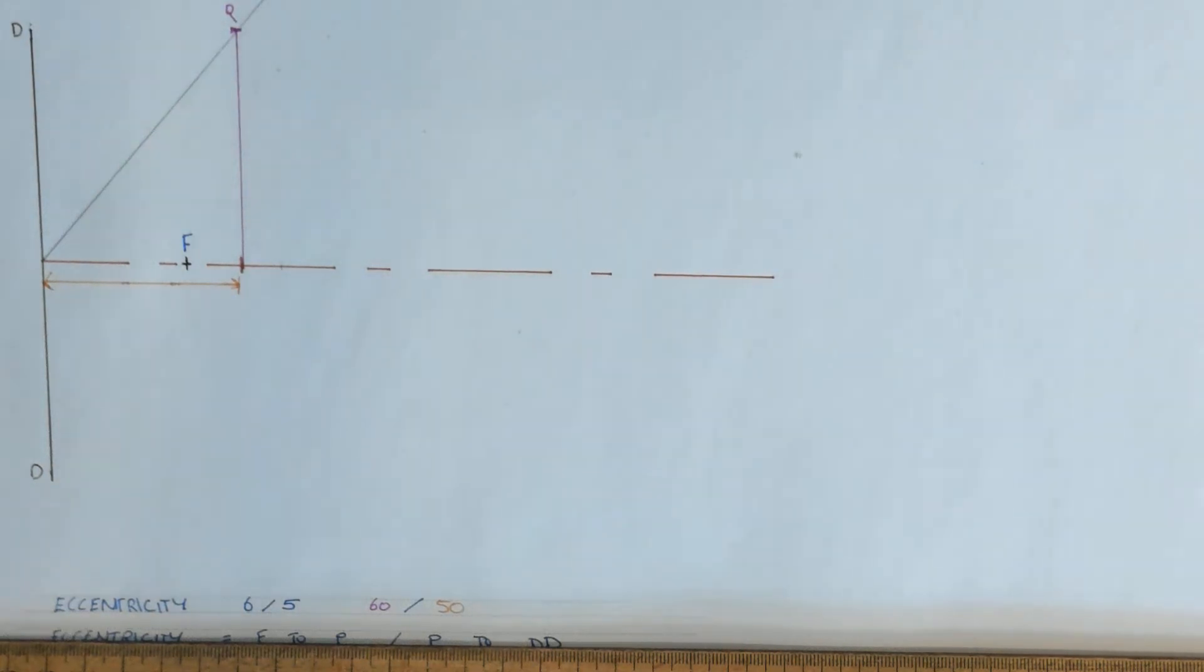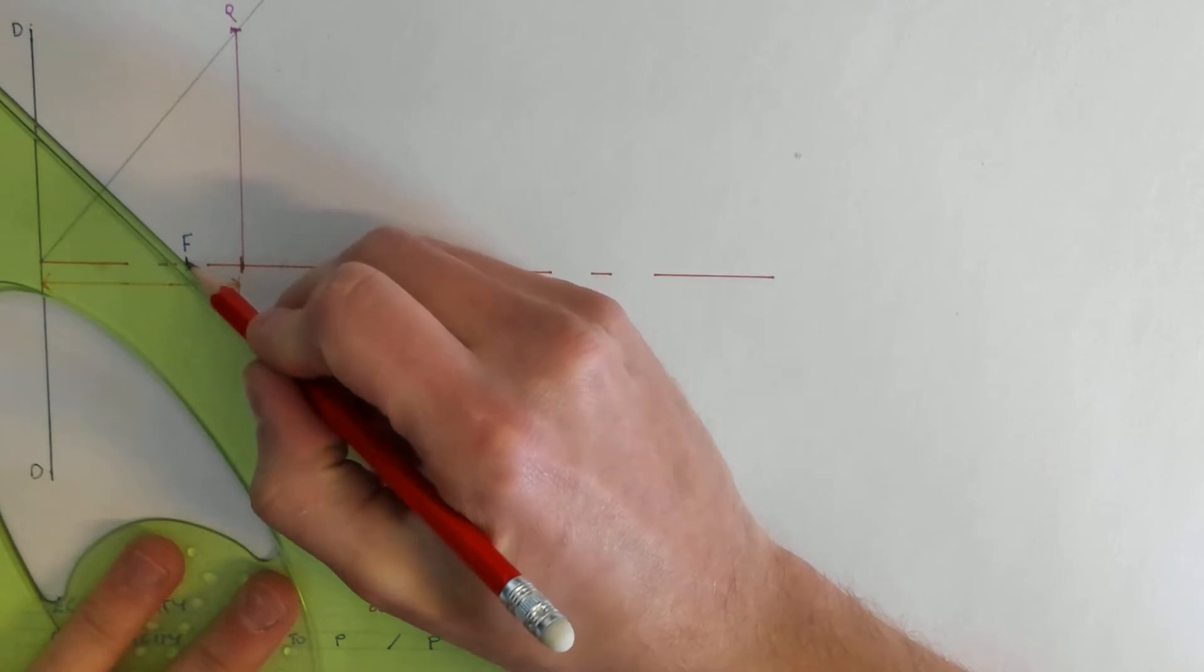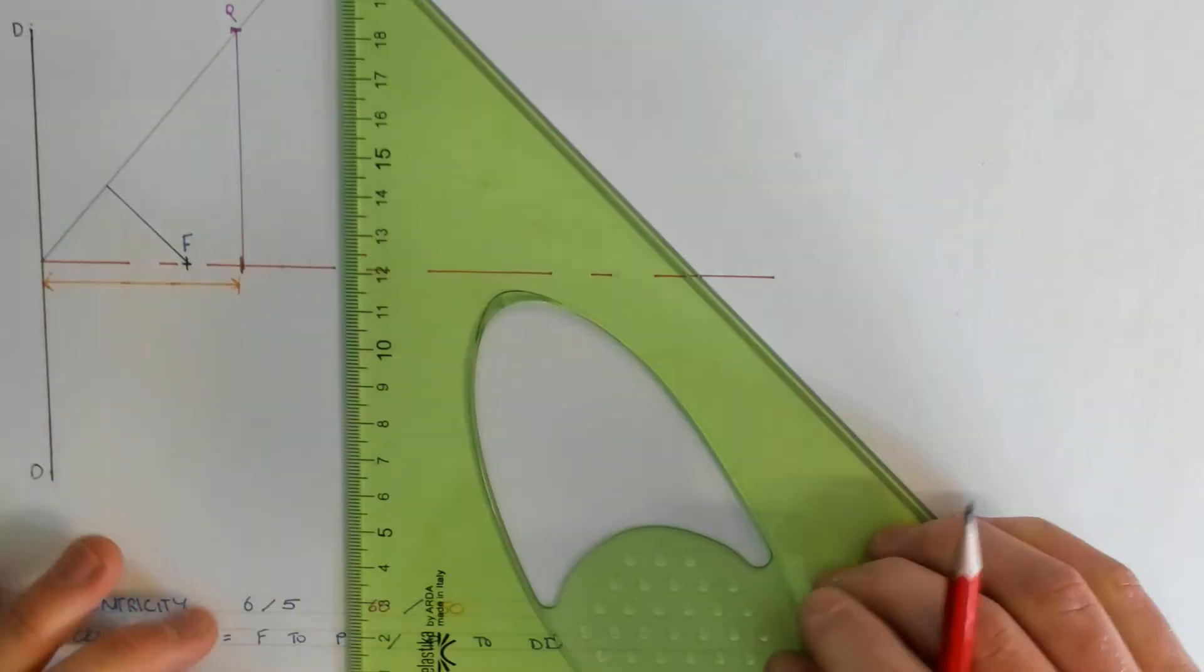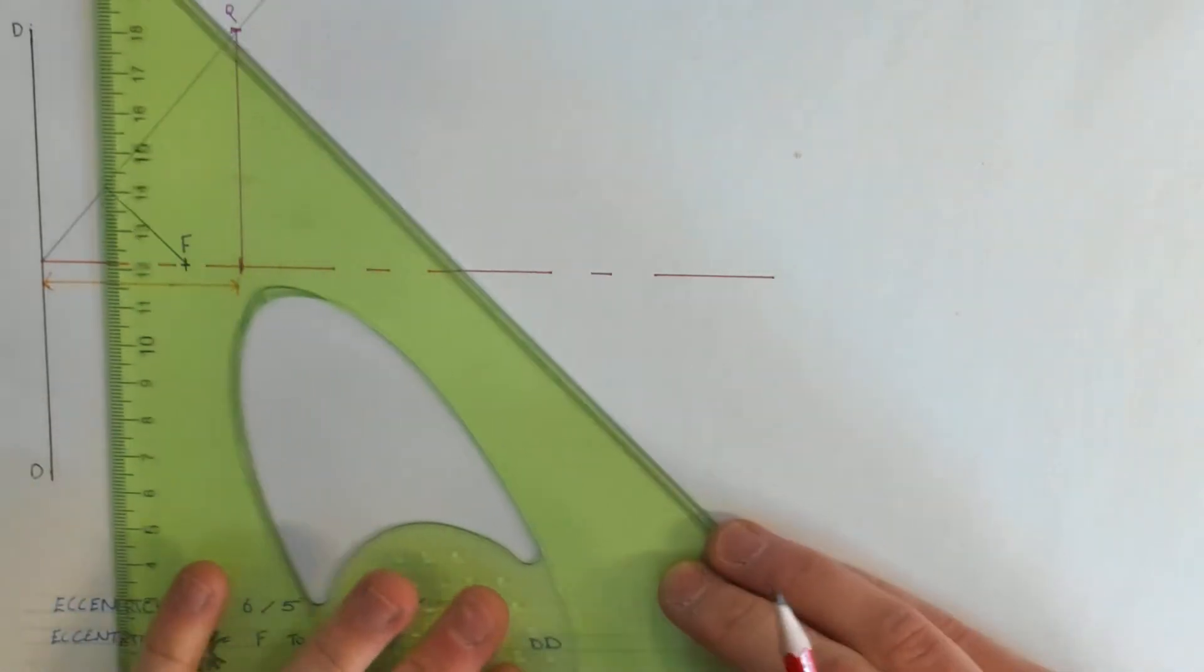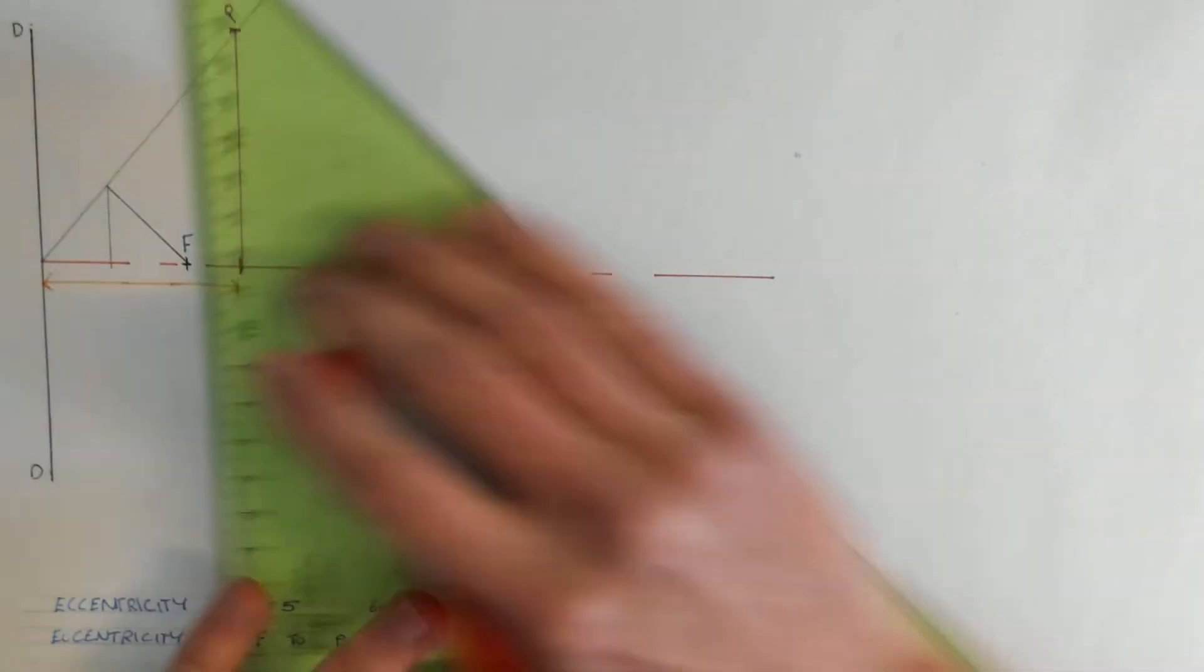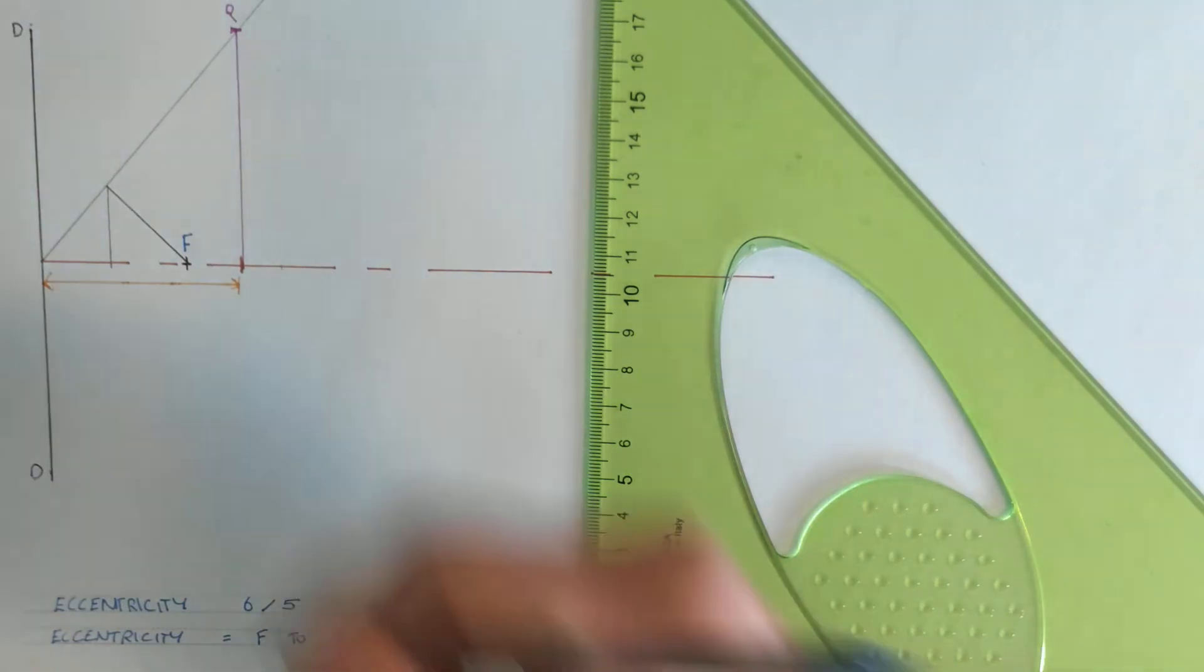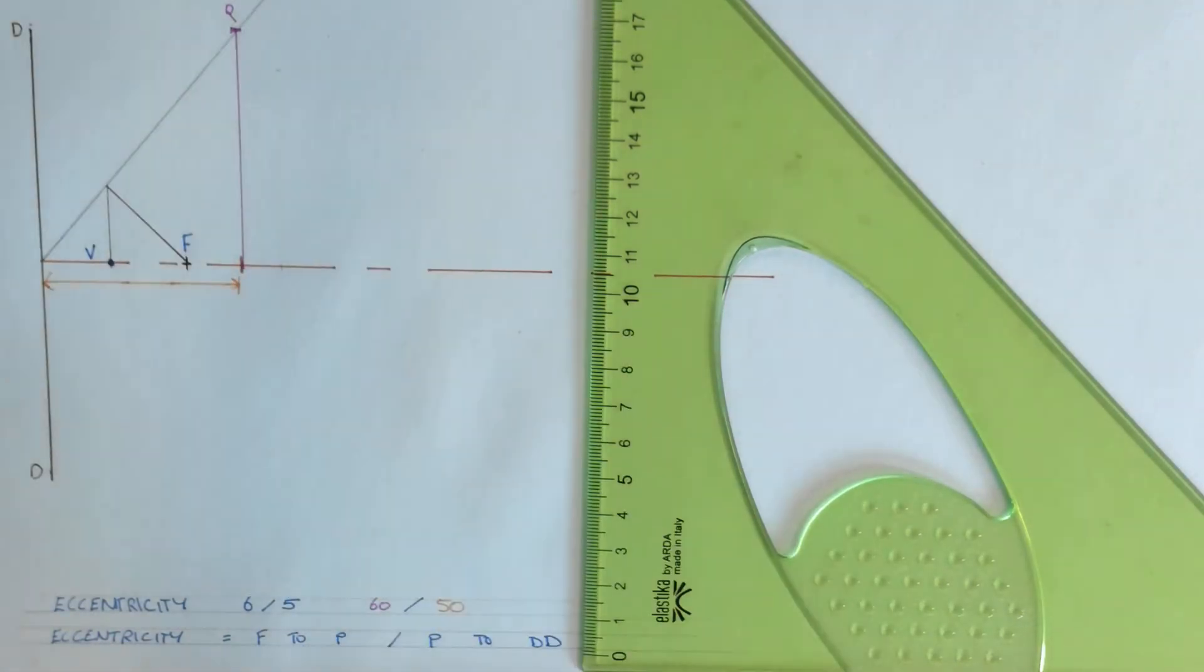So once you've got this set up, as we just mentioned, we need to find the vertex. To find the vertex, we always project the 45-degree line from the focal point back up until it crosses the line of eccentricity, and we can just project that down to the axis from there. Where it crosses the axis gives us our vertex. So we're just going to label that V for the vertex.